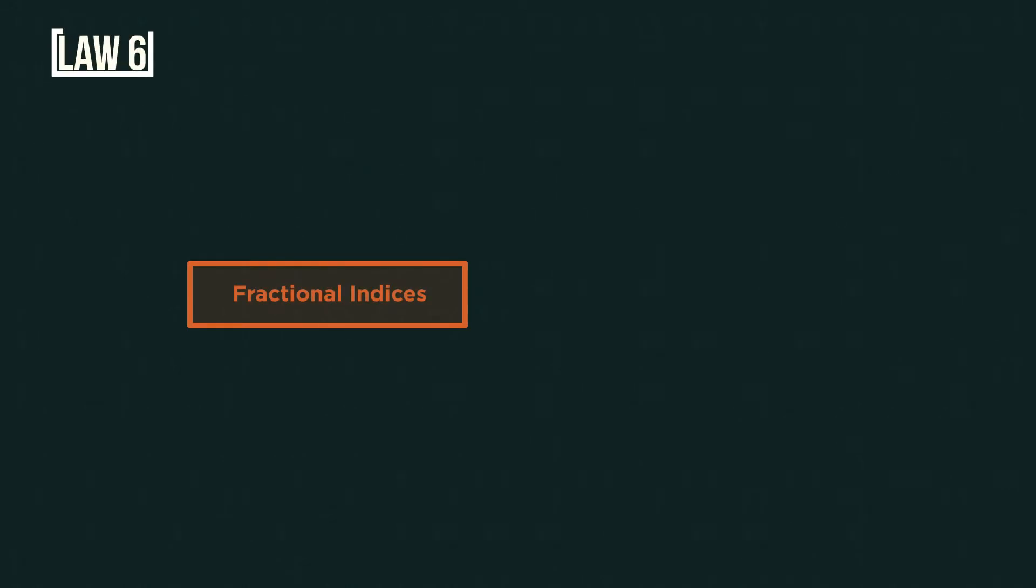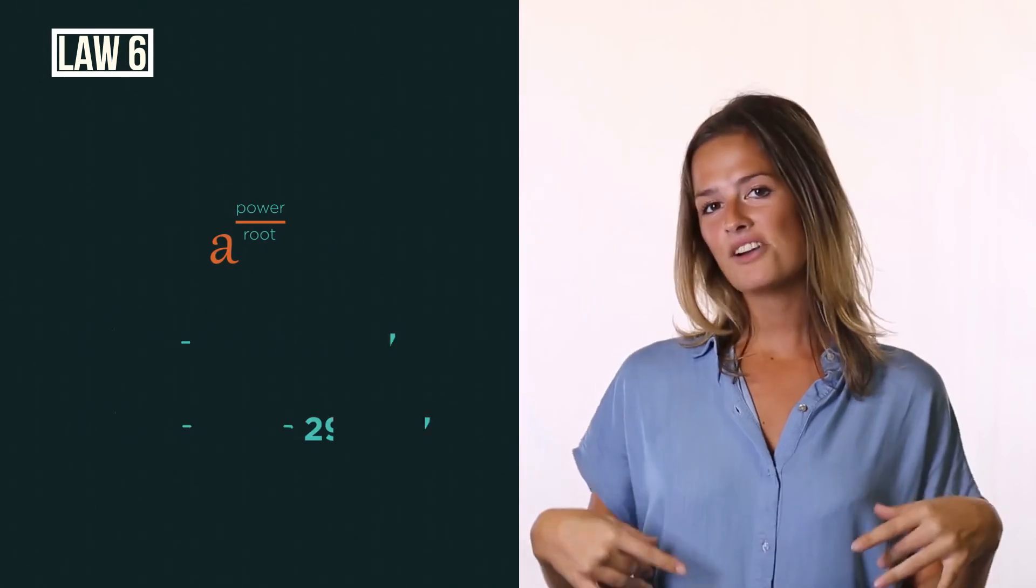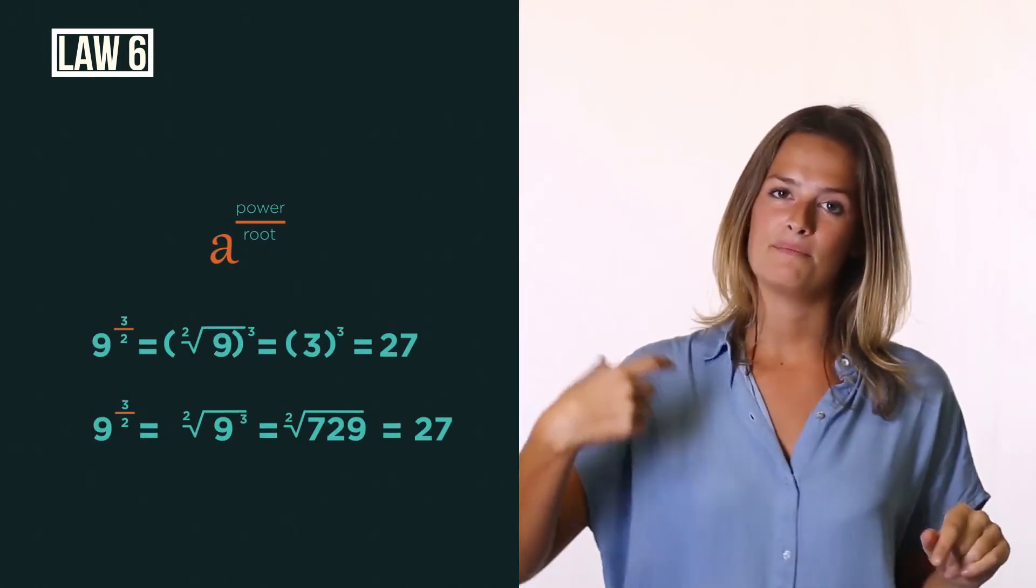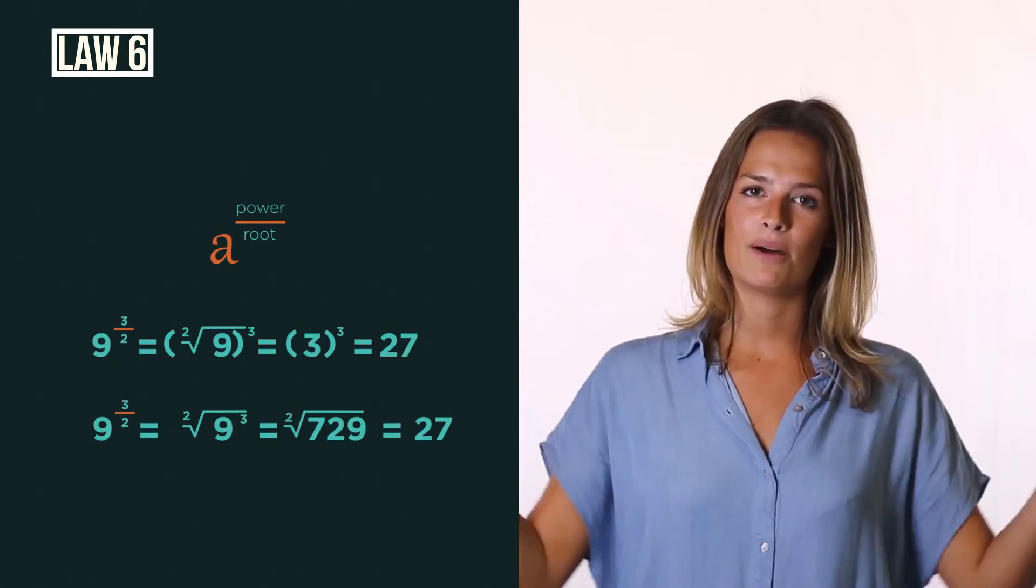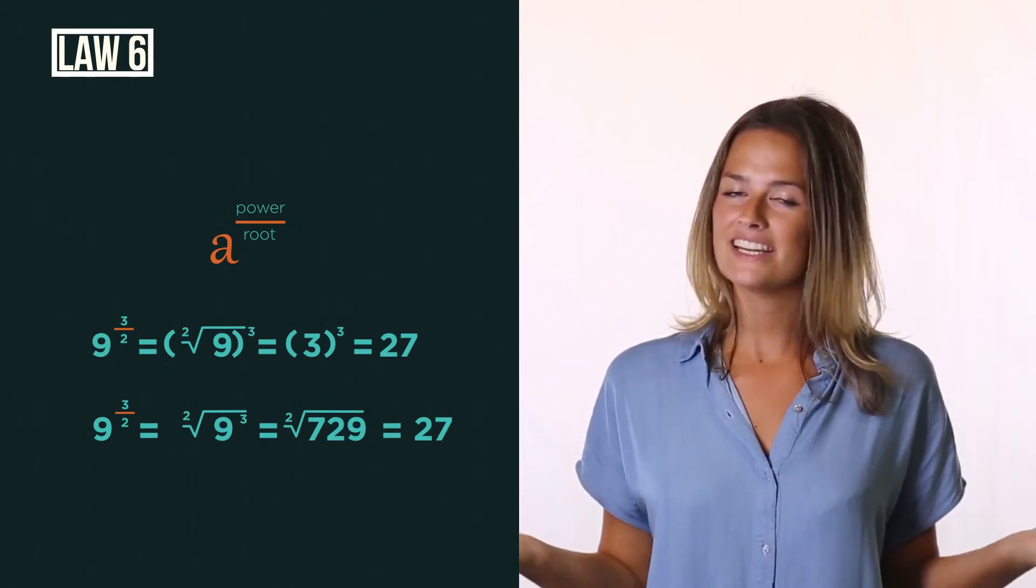So this is the law of fractional indices. I just think of it as power over root. The power is on top because it makes things bigger and the root is on the bottom because it makes things smaller. So power over root. I always do the root first and the power second to keep the numbers small. But you can actually do either one first. It doesn't matter.